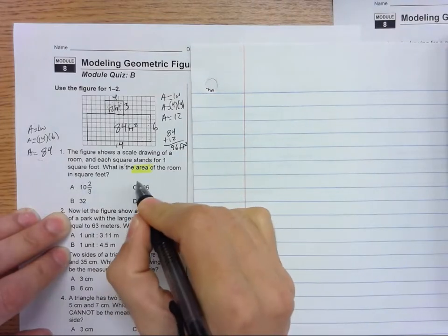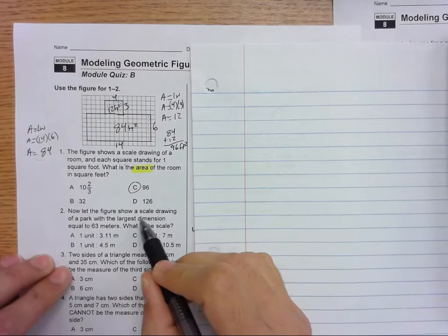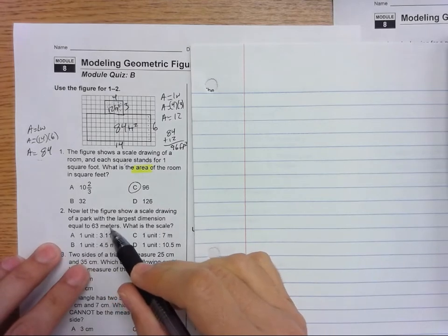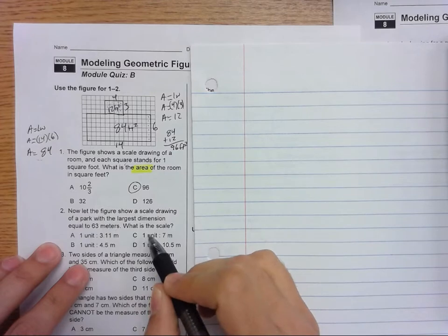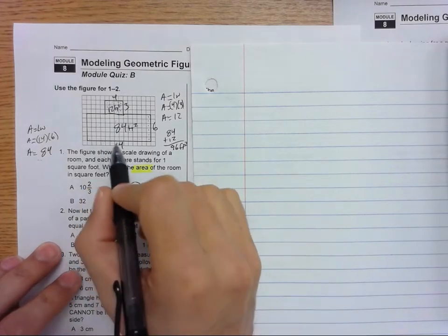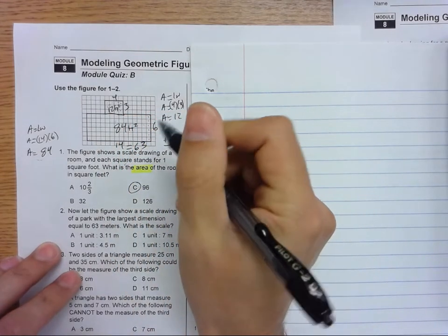Number 1 is C. On to 2. Now, the figure shows a scale drawing of a park with the largest dimension equal to 63 meters. What is the scale? So here's 14, but it's actually 63.